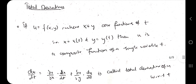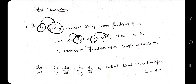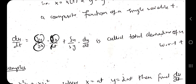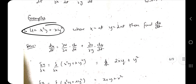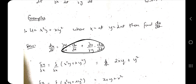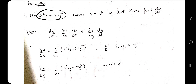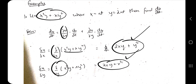The next topic is total derivatives. Here f(x,y) is given, where x and y are both dependent on t. The formula to find du/dt is: du/dt = (∂u/∂x)·(dx/dt) + (∂u/∂y)·(dy/dt). For the example, u = x²y + xy². Find ∂u/∂x and ∂u/∂y using partial differentiation as before, keeping the other variable constant each time.